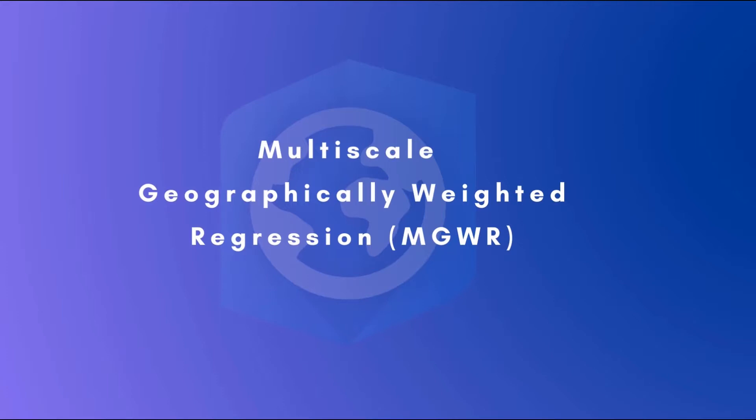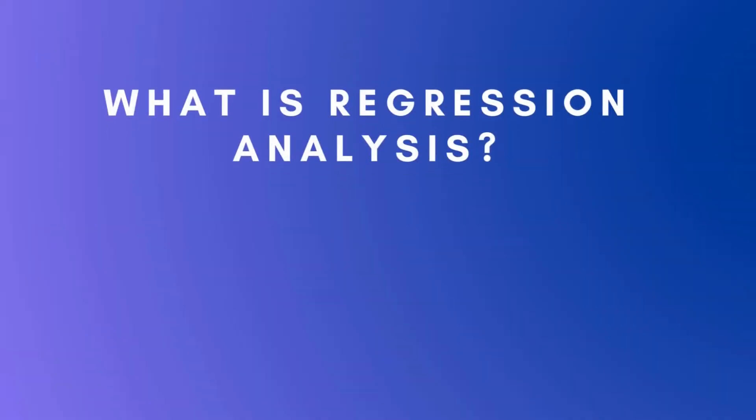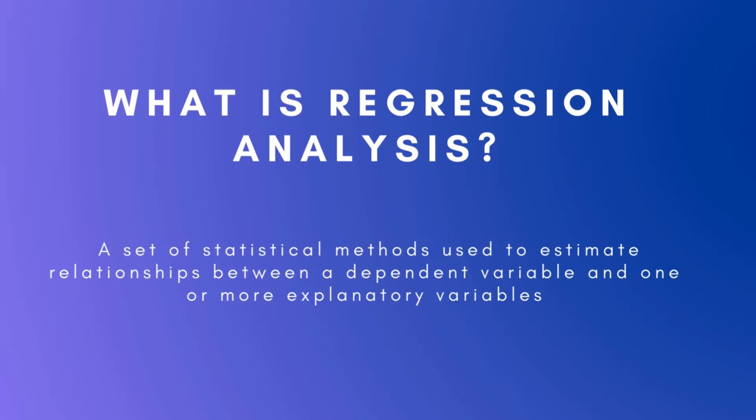Before we jump into ArcGIS Pro, let's do a quick refresher about regression analysis. Regression analysis is a set of statistical methods used to estimate relationships between a dependent variable and one or more explanatory variables. It can take the data you provide and help you understand if there is a relationship between the variables in your dataset, and if so, what type. It can't tell you if one variable causes a change in another, but it can show you if there's a relationship between trends and changing variables.